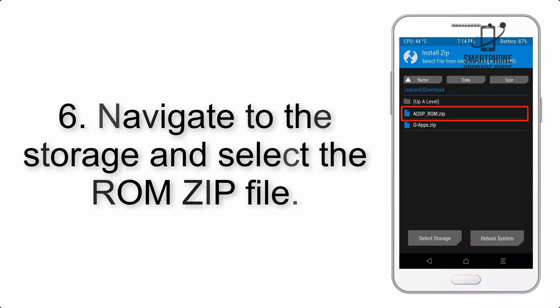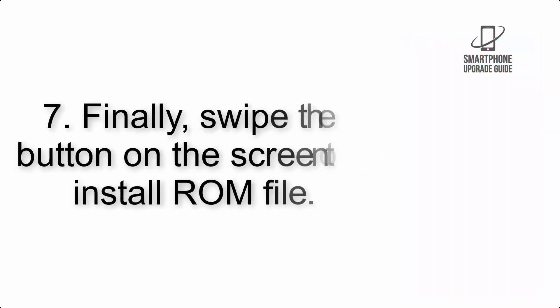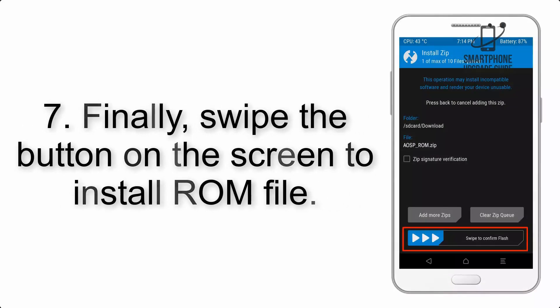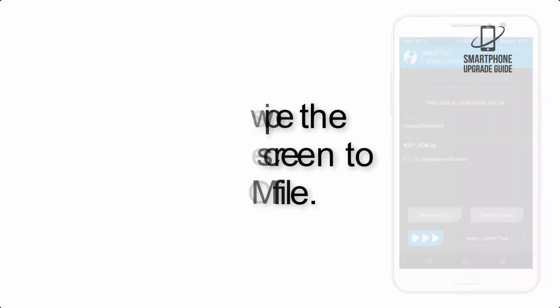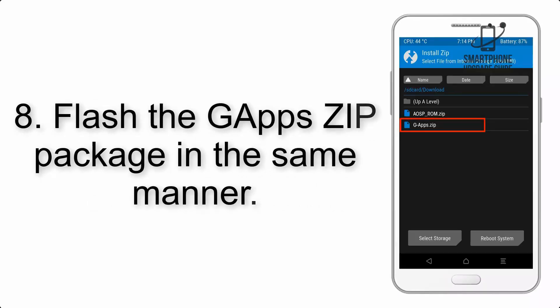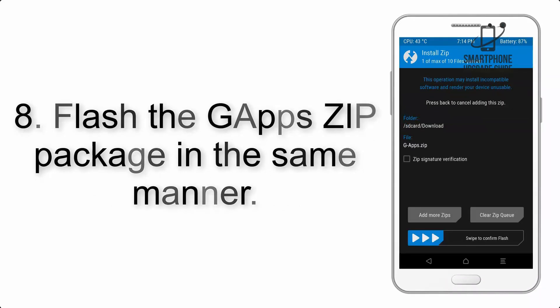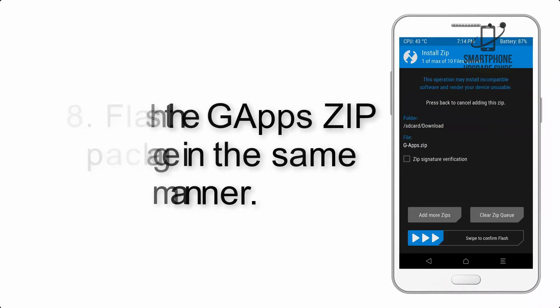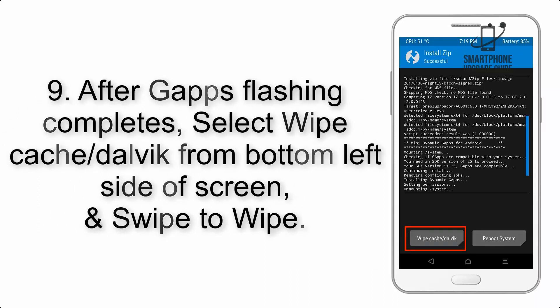Step 5: go back to the recovery main screen and tap on the Install button. Step 6: navigate to the storage and select the ROM zip file. Step 7: swipe the button on the screen to install the ROM file. Step 8: flash the GApps zip package in the same manner.